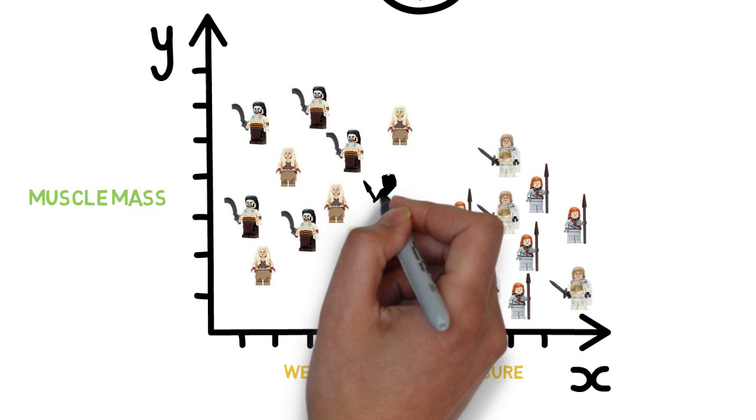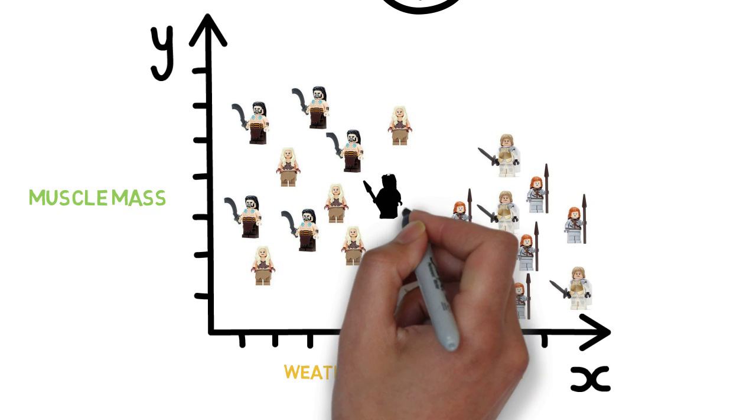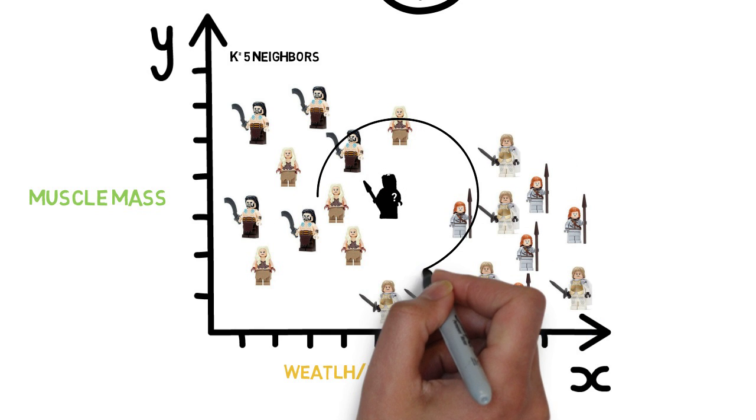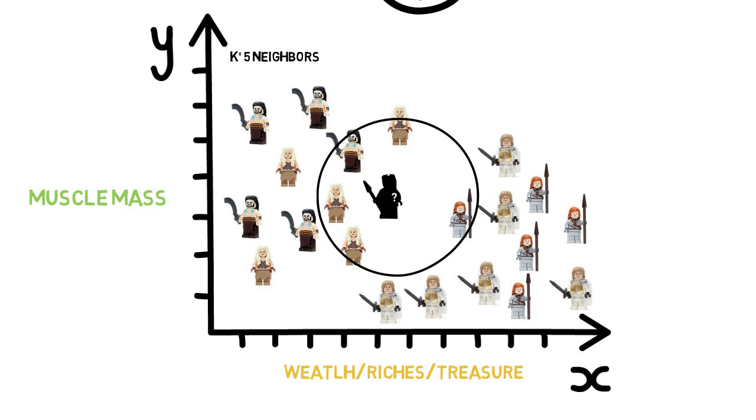So looking at our unknown person, we measure up their treasure as well as their gains. We place them around about here. And using K equals 5, we draw a circle until we have 5 neighbors in the vicinity. Now, using nearest proximity, we can see that this person has 3 neighbors that are Dothraki and one neighbor that is Westerosian. And thus, using majority voting, we can classify that the person is Dothraki.